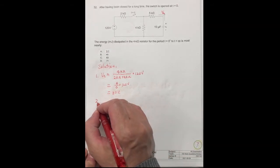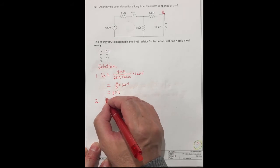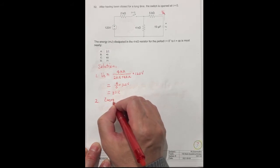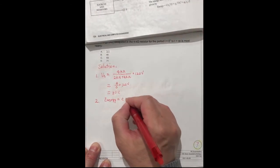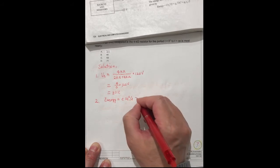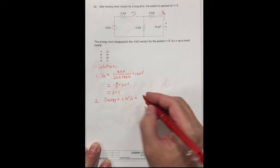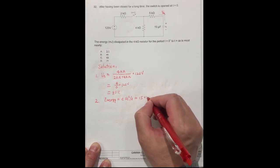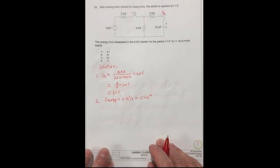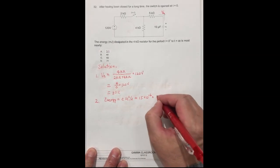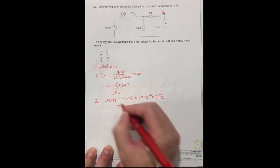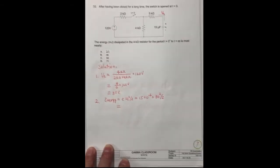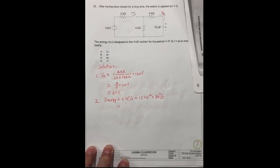Second, find the total energy stored in the capacitor. The energy equals C times Vc squared divided by 2. With Vc equal to 80V, this becomes C times 80 squared divided by 2. Using the calculator, the total energy stored is 48 millijoules.